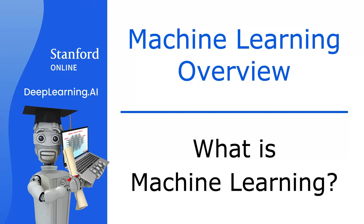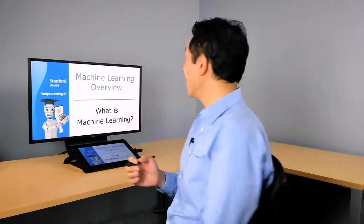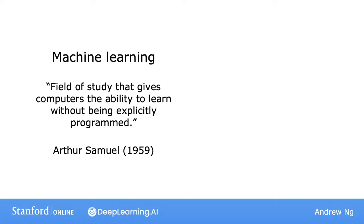So what is machine learning? In this video you'll learn a definition of what it is and also get a sense of when you might want to apply it. Let's take a look together. Here's the definition of machine learning that is attributed to Arthur Samuel. He defined machine learning as the field of study that gives computers the ability to learn without being explicitly programmed.